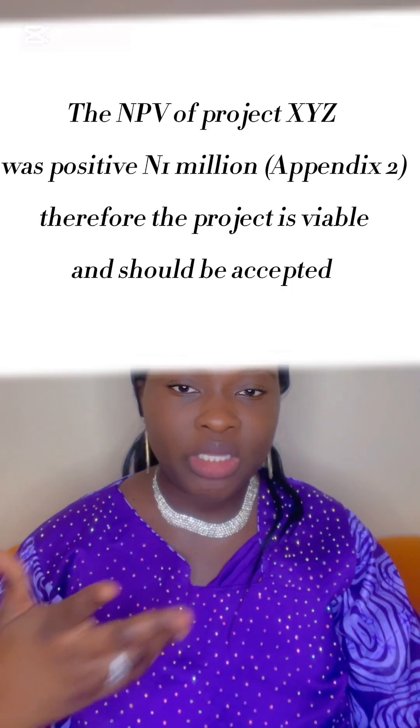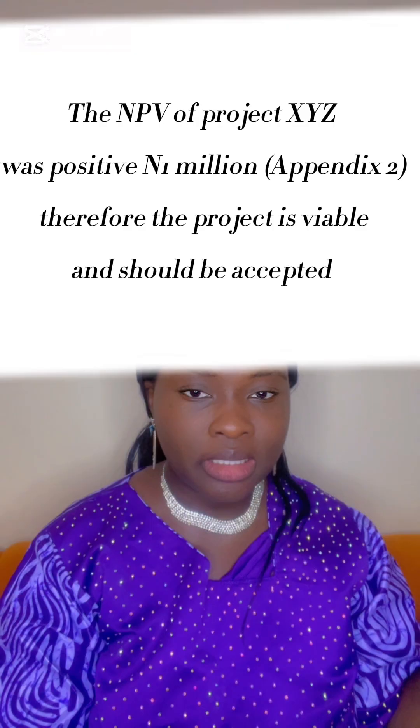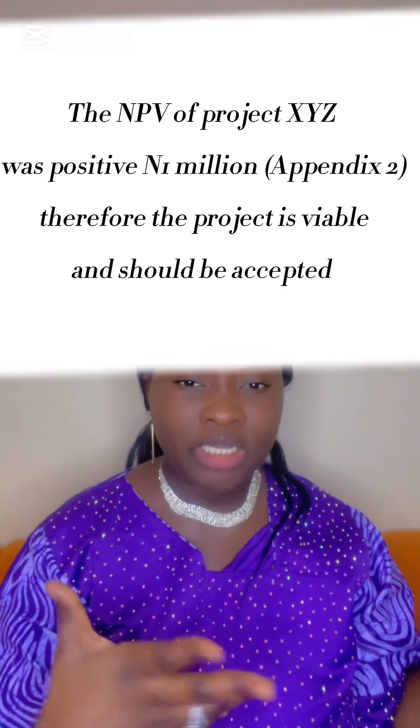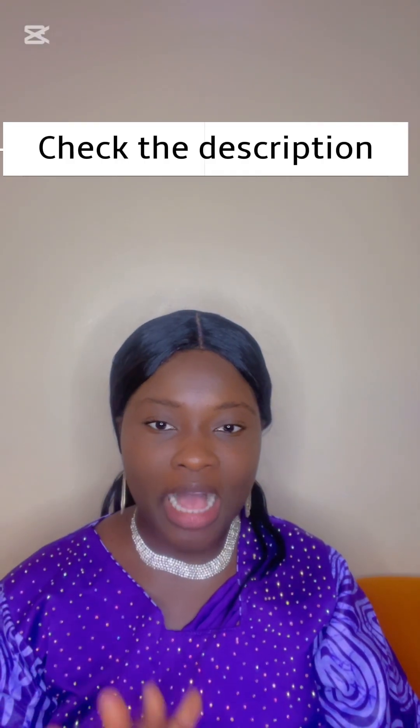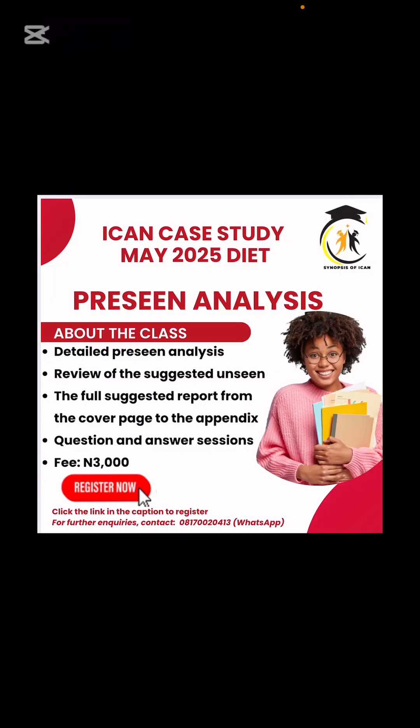Not linking the appendix is also a very big problem — marks are awarded for it. For example, write something like: 'The NPV of project XYZ was positive one million (see Appendix 2).' As a bonus tip, ensure you use headings — marks are awarded for headings — and keep your handwriting legible. The exam can feel rushed but try to maintain legible handwriting. That's basically the overview of financial data analysis — see you tomorrow!